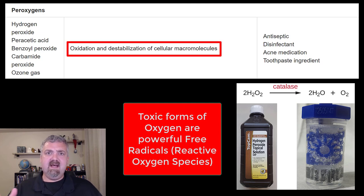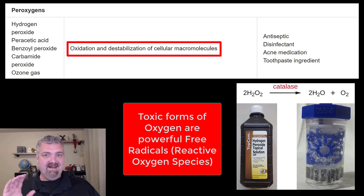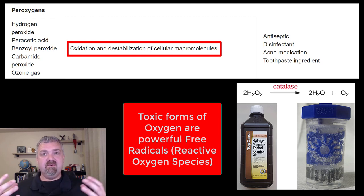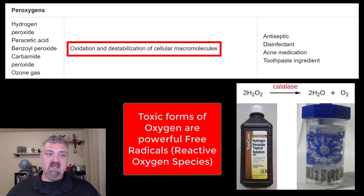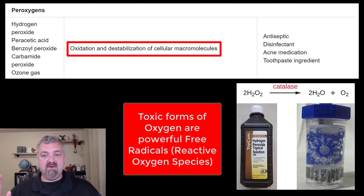You can see here how these work — it says oxidation, which is the peeling off of electrons and destabilization of cellular macromolecules. In plain English, they work by creating free radicals. The most common free radicals are called reactive oxygen species. The peroxigens generate a ton of reactive oxygen species, and if you're an anaerobic organism that can't deal with any of them, it's going to wipe you out.